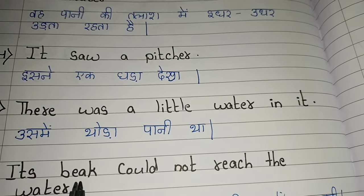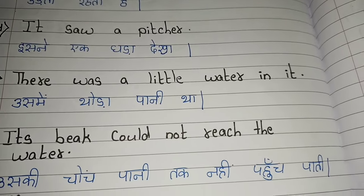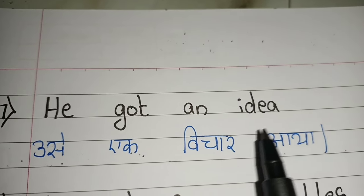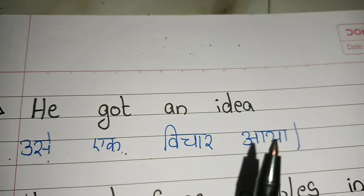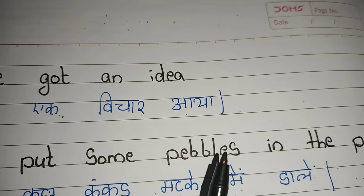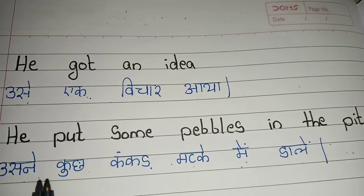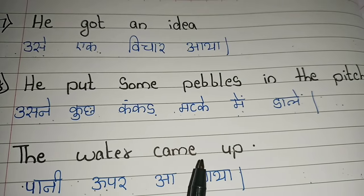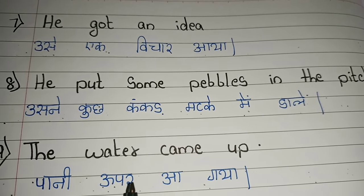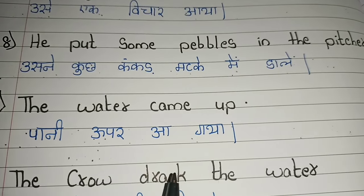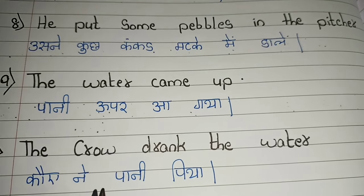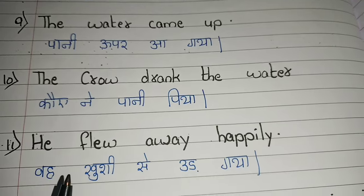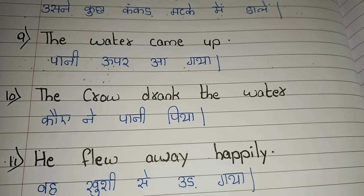Its beak could not reach the water. उसकी चोंच पानी तक नहीं पहुँच पाती। He got an idea — उसे एक विचार आया। He put some pebbles in the pitcher — उसने कुछ कंकर घड़े में डाले। The water came up — पानी ऊपर आ गया। The crow drank the water — कौवे ने पानी पीया। He flew away happily — वह खुशी से उड़ गया।